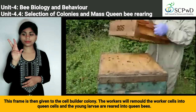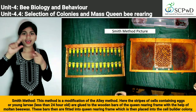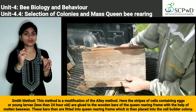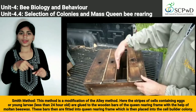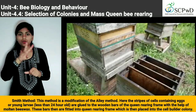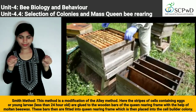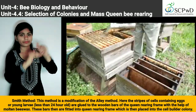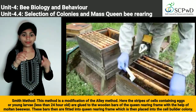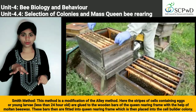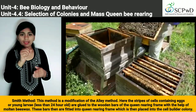Method 3: Smith method. This method is a modification of the LA method. Here, strips of cells containing eggs or young larvae less than 24 hours old are glued to the wooden bars of the queen rearing frame using molten beeswax. These bars are then fitted into a queen rearing frame, which is placed into a cell builder colony.